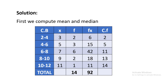To find mean deviation about mean and mean deviation about median, we first need to calculate the mean value and median value. Since it is a grouped frequency distribution, we first have to find out the x value, which is the midpoint value. Midpoint is calculated as (2+4)/2 = 3, (4+6)/2 = 5, (6+8)/2 = 7, (8+10)/2 = 9, (10+12)/2 = 11.